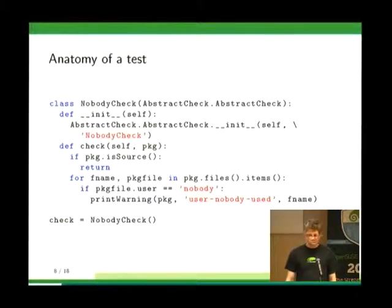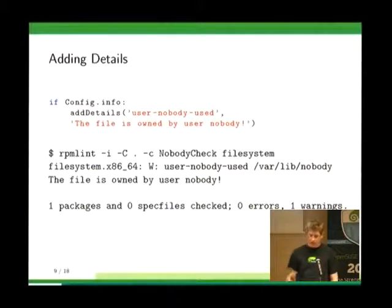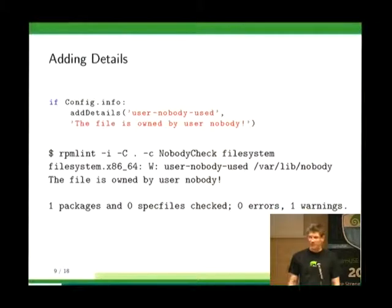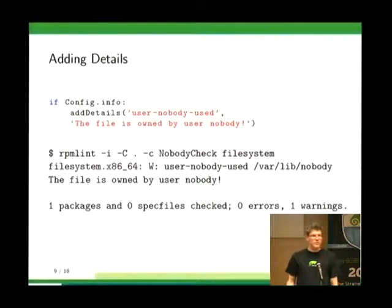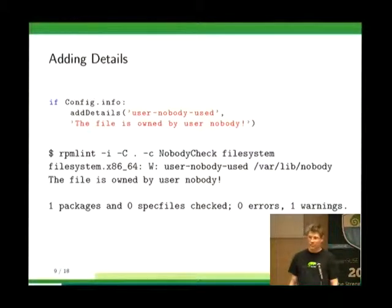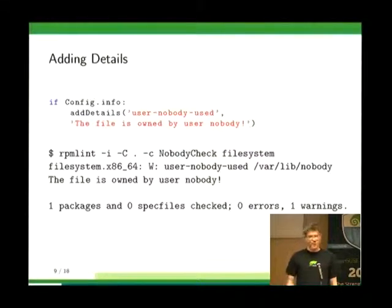You also want to provide more information to packagers using the add_details function, which adds explanatory text shown to the packager. In this case it's a bit of a bad example because it doesn't tell you what to actually do. For that, we have a wiki page on the OpenSUSE wiki listing all common errors, which has more space to explain them. It's also better in the wiki because you can edit it without submitting the package and rebuilding the whole distribution to get the new explanation into the build logs.